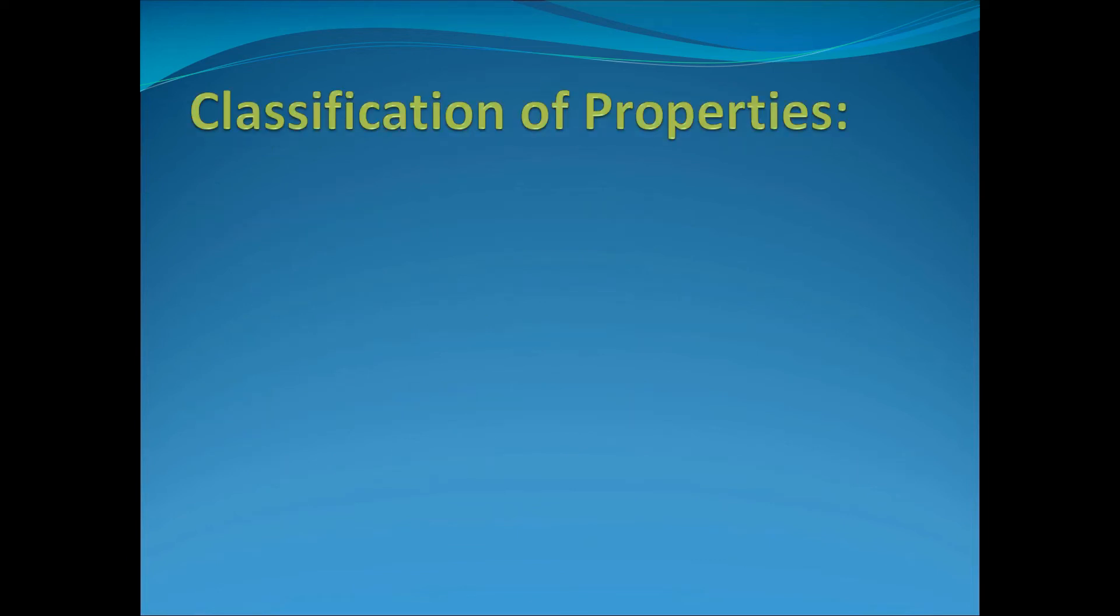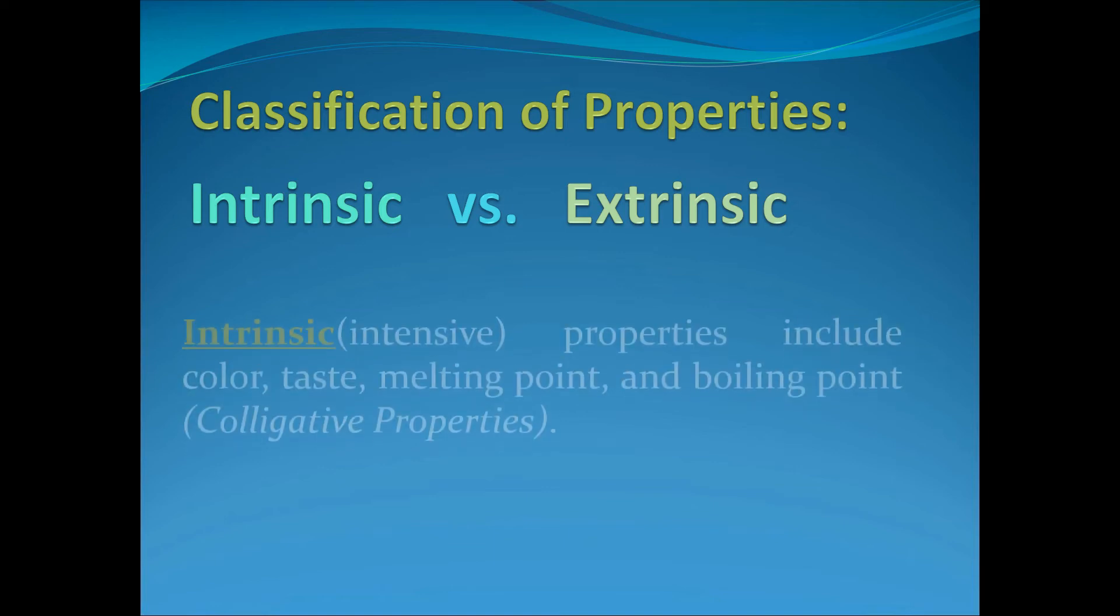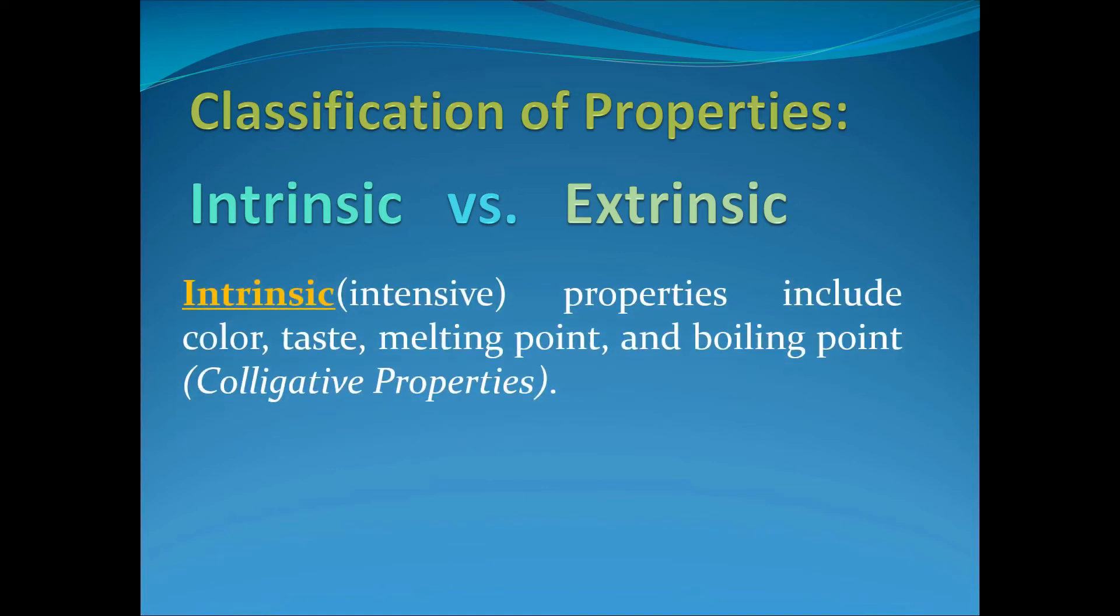Let us now talk about the classification of properties of matter. We have the intrinsic properties and the extrinsic properties. When we say intrinsic properties or sometimes also known as intensive properties, these include the color, the taste, the melting point, boiling point, or some other colligative properties of matter wherein these properties do not rely or depend on the amount of matter.